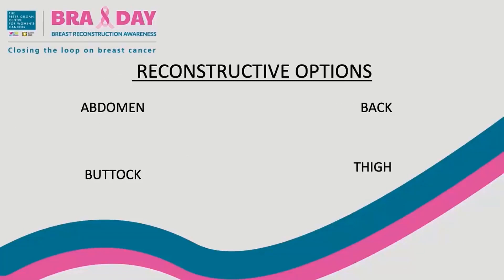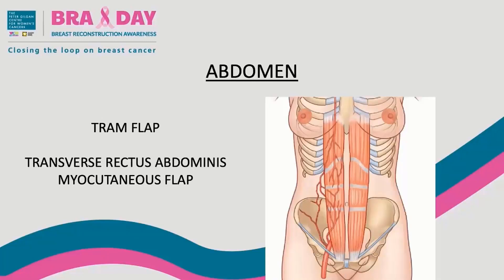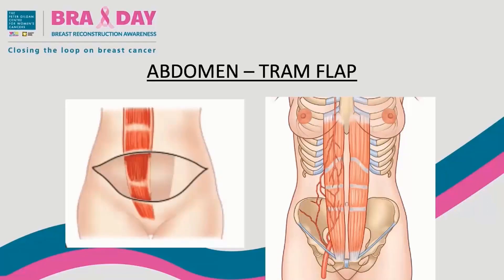Let's review the most common areas of the body where tissue is used to recreate the breast. The four regions are your abdomen, your back, your buttock, and your thigh. The abdomen is the most common area because the majority of women carry extra tissue there, and the resulting scar can improve the contour of the abdomen. The TRAM flap stands for the transverse rectus abdominis myocutaneous flap, meaning skin, fat, and part of your rectus muscle is transferred to your chest. The tissue used is from just above your belly button to above your pubic bone. A TRAM flap is most often transferred as a pedicle flap, which shortens the length of the surgery.